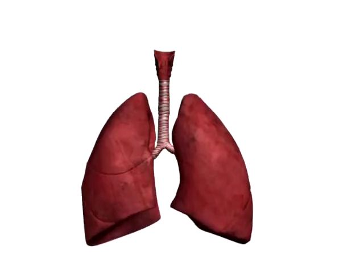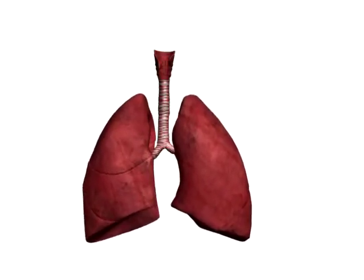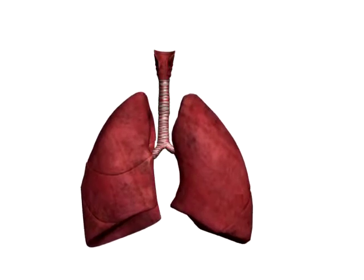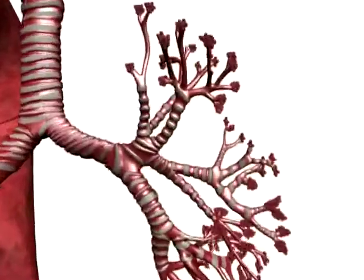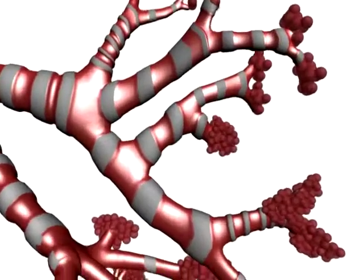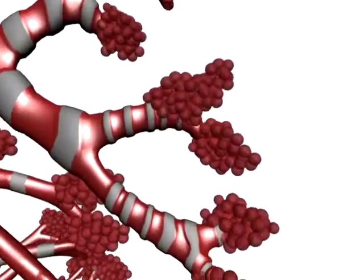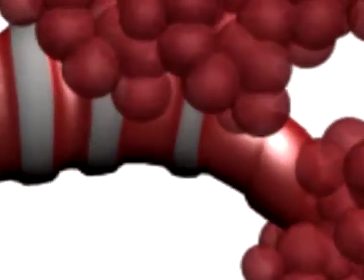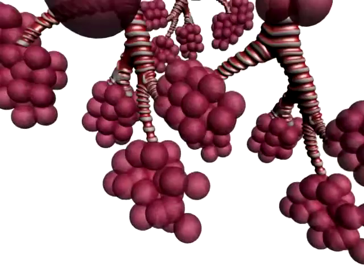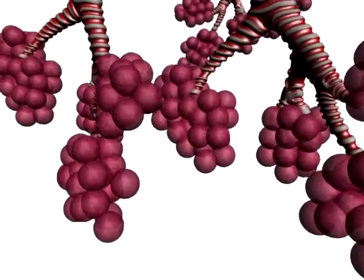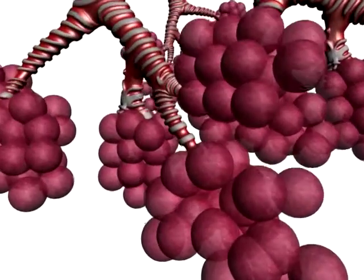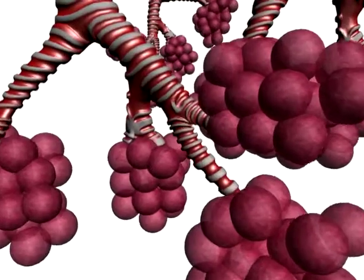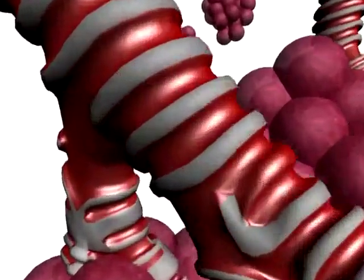The air we inhale through our nose and mouth enters our respiratory passages. The air enters through the airway passages — first the trachea, then the bronchi, bronchioles, and finally into tiny sacs called alveoli, where the exchange of gases takes place.